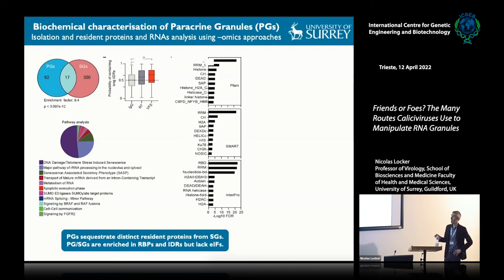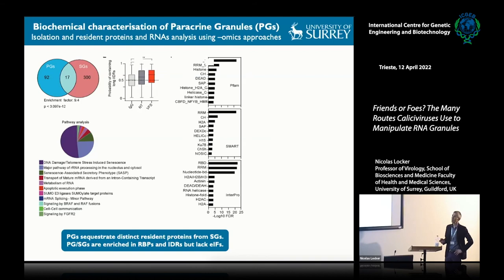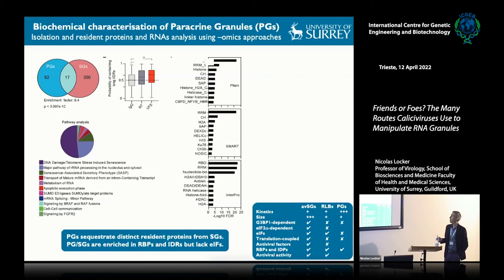Interestingly, paracrine granules have proteins associated with pathways linked to cell death and cell-to-cell communication, which could feed into the paracrine signaling hypothesis. So again, different properties—they lack initiation factors, and are enriched in proteins associated with these distinct cellular functions.